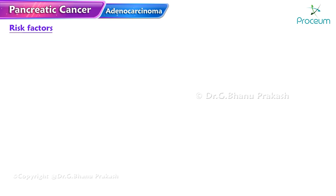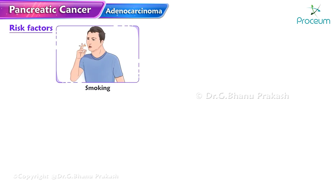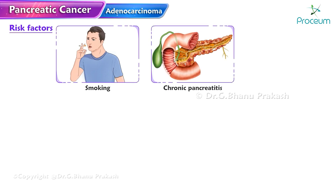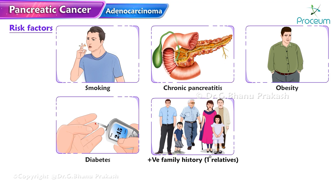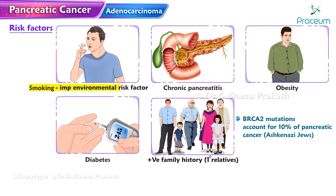Risk factors for pancreatic adenocarcinoma include smoking, chronic pancreatitis, obesity, diabetes, and positive family history — especially first-degree relatives. Family history of pancreatic cancer, for example BRCA2 mutations, accounts for 10% of pancreatic cancer in Ashkenazi Jews. Smoking is the most important environmental risk factor. Pancreatic adenocarcinoma is more common in African Americans, and men are more likely to be affected than women.